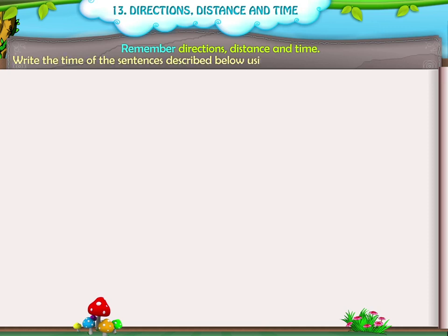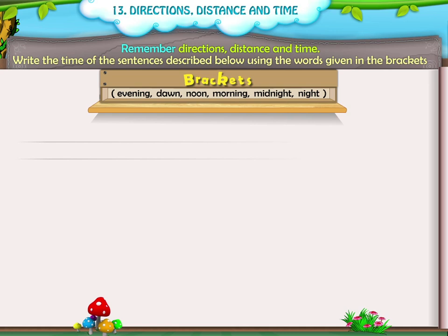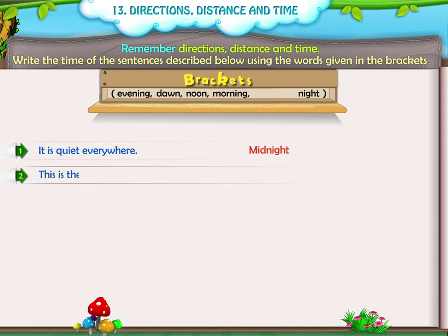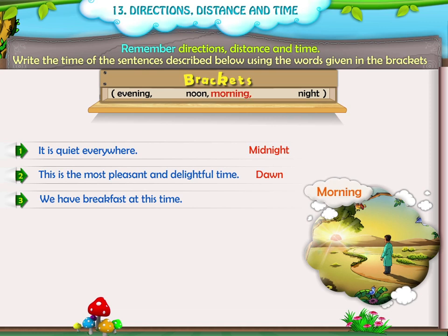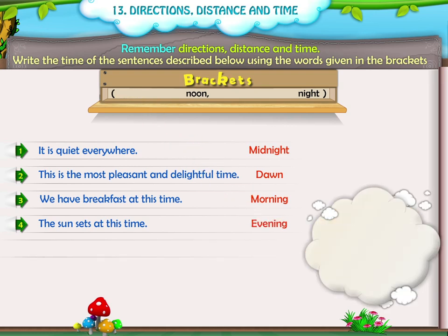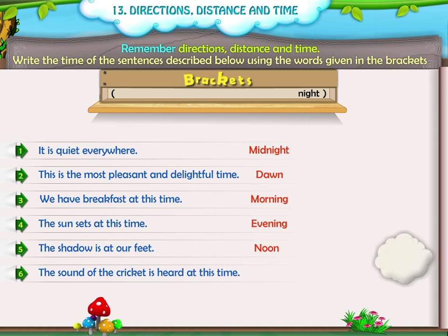Activity One: Write the time of the sentences described below using the words given in the brackets — Afternoon, Evening, Noon, Morning, Midnight, Night. First: It is quiet everywhere — Midnight. Second: This is the most pleasant and delightful time — Dawn. Third: We have breakfast at this time — Morning. Fourth: The sun sets at this time — Evening. Fifth: The shadow is at our feet — Noon.